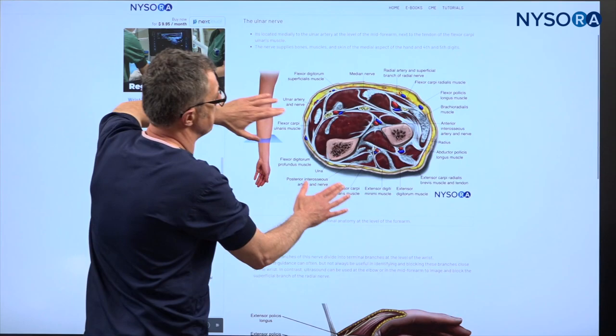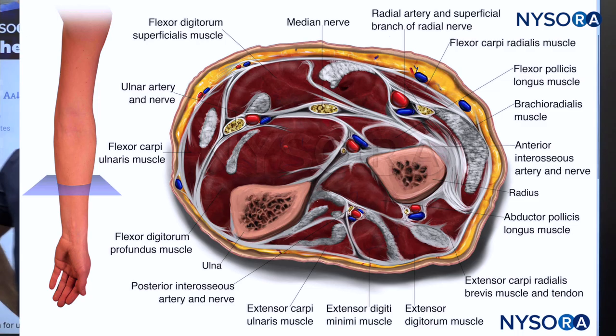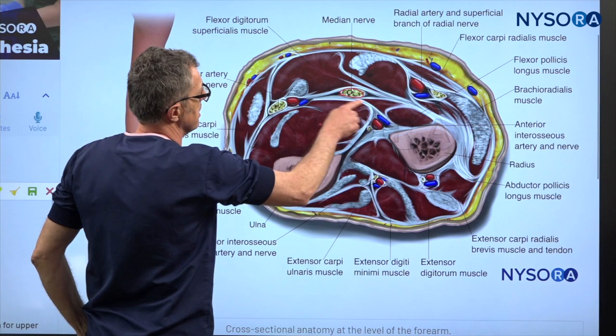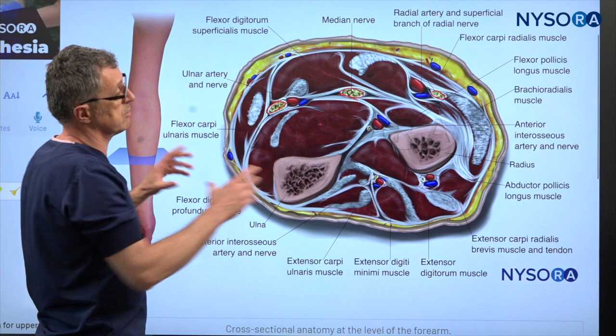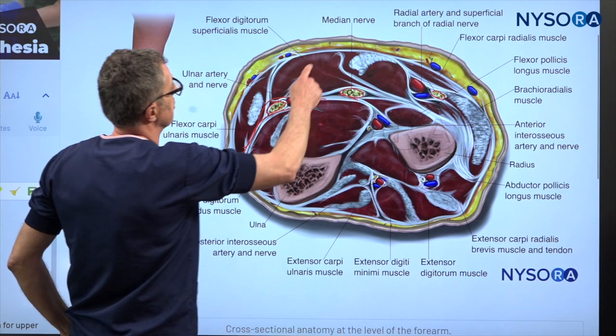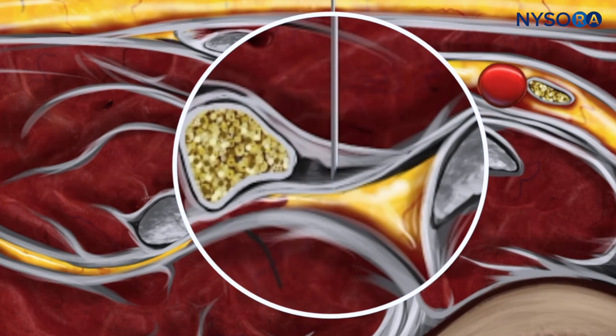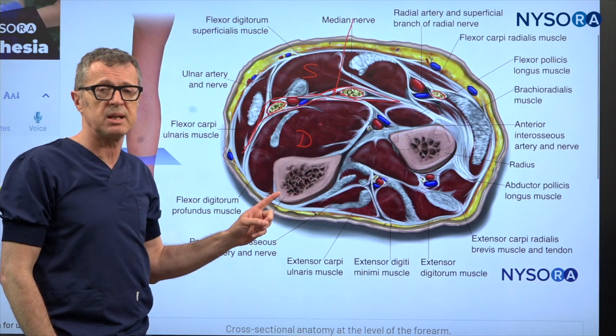Let's review the anatomy. In order to get this block done properly, it's very important to understand the basic anatomical principles, which are part of the functional regional anesthesia anatomy taught in the compendium. Here we have the cross-section of the forearm, and what we see is the median nerve, the ulnar nerve, and the superficial radial nerve. These three nerves anesthetize the entire hand. Importantly, in the reverse ultrasound anatomy illustration used in NYSORA, these nerves are enveloped or sandwiched in the fascia sheets belonging to the superficial and deep flexors of the digits.